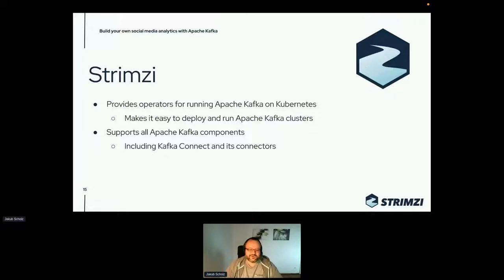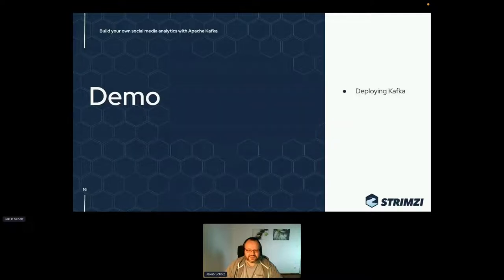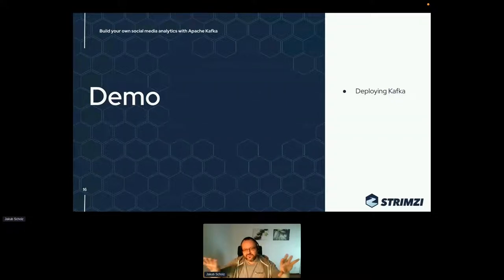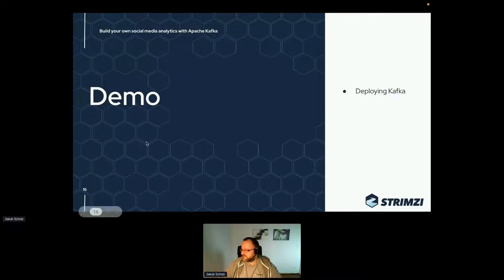To run everything on Kubernetes, I'll use the Strimzi project, which provides operators for running Apache Kafka on Kubernetes. It tries to make it super easy to deploy Kafka on Kubernetes and supports all kinds of components including Kafka Connect and connectors — everything we'll be doing today. Now, before we actually do something, we need to deploy the backbone — the Kafka cluster with the brokers and Kafka Connect. Let's have a quick look at how you can do that.